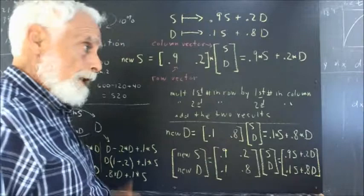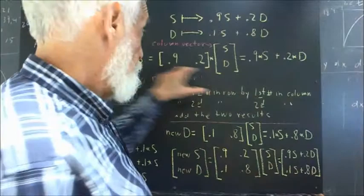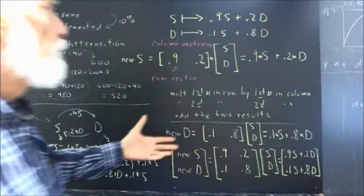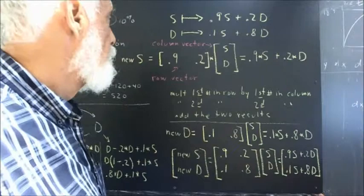So, I have a row vector times a column vector. And the rule for a row vector times a column vector. Well, the new number of S has to come out 0.9 S plus 0.2 D. So, what do you think the rule is for multiplying this row by this column?